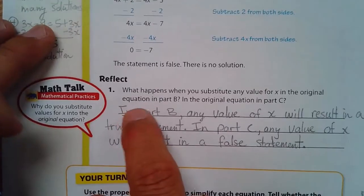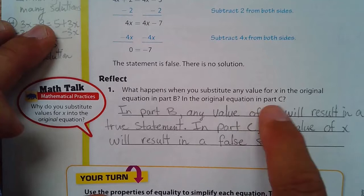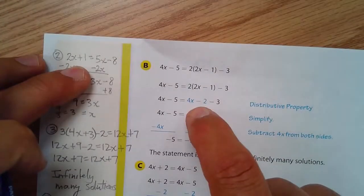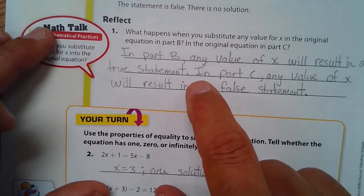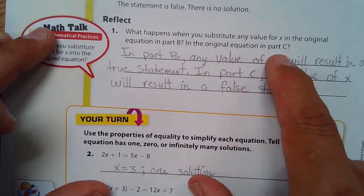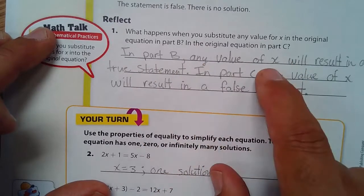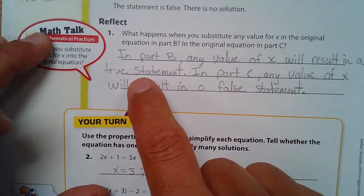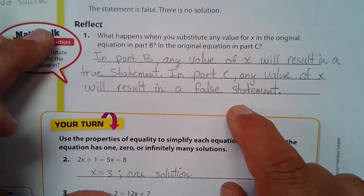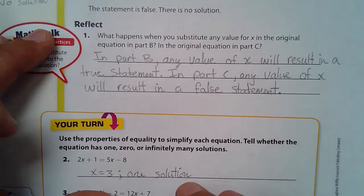So let's reflect. What happens when you substitute any value for x in the original equation in Part B? So this one. In the original equation in Part C. In Part B, any value of x will result in a true statement. In Part C, any value of x will result in a false statement.